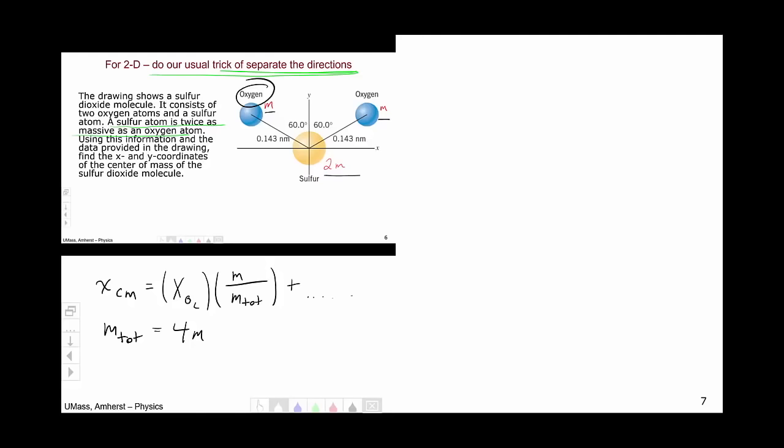Now we need the x location of this particular oxygen atom. We know that this distance is 0.143 nanometers, and that this angle is 60 degrees. We want how far is it in x, or this distance here.